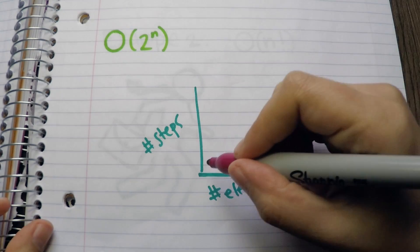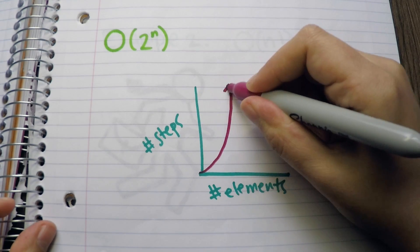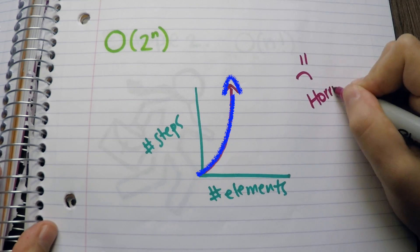The growth of O(2^n) is exponential. It starts slow and grows very fast. You should optimize your algorithm if you can.